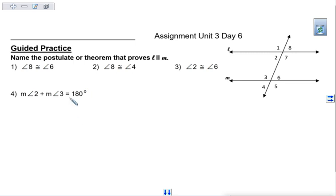Now, onto the guided practice. We're looking at angle 8 and angle 6 being congruent. Why are they congruent? Because they're corresponding angles.